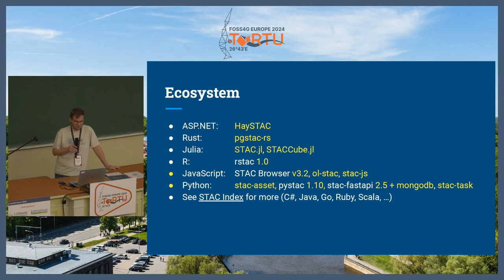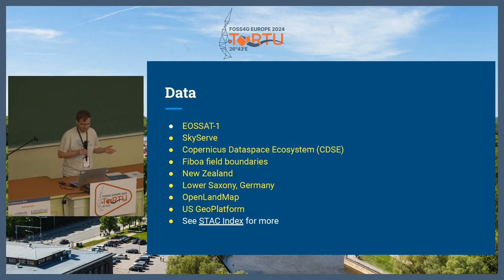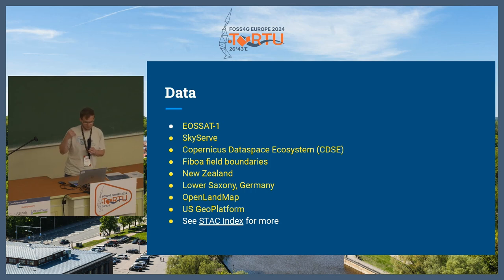STAC FastAPI has been updated — there is a new back-end; before it had Elasticsearch and PostgreSQL (PGstac), and you can now use MongoDB if that's your backend of choice. STAC Task is a new tool meant to run algorithms effectively over a large set of datasets. For more, see the STAC Index — there is a long list of tools there. For datasets, there is just an extract of new datasets that were added and made available in STAC; go through them in STAC Index and see whether there's anything of interest.